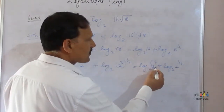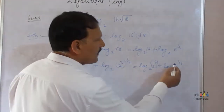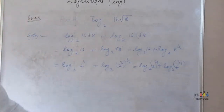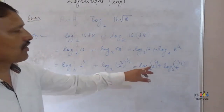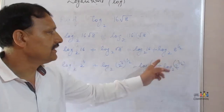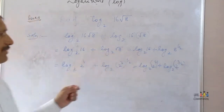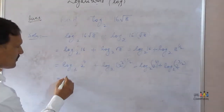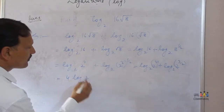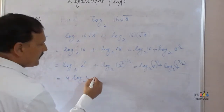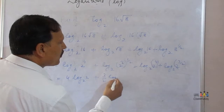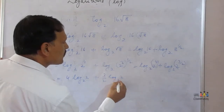Now we apply the third law of logarithms: log of m raised to n equals n log m. So this becomes 4 into log of 2 to the base 2, plus 3 by 2 into log of 2 to the base 2.